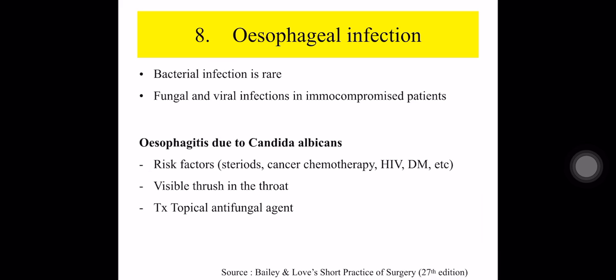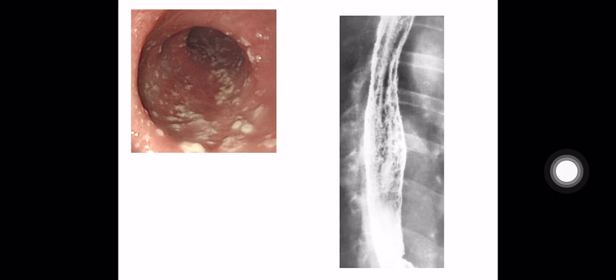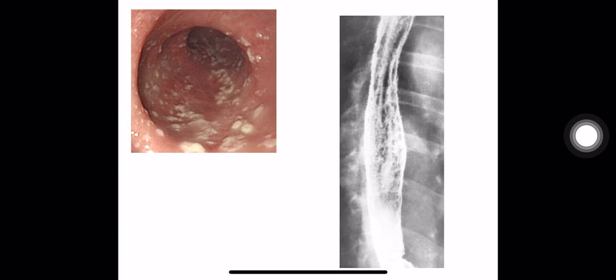The next one is esophageal infection. Bacterial infection is rare; it is mainly due to viral causes like herpes simplex virus and cytomegalovirus, and may also be due to Candida albicans. Risk factors are immunocompromised patients such as those with HIV, diabetes mellitus, and patients on steroids or anti-cancer chemotherapy. You can see visible thrush in the throat in association with esophagitis due to Candida albicans, and you can treat it with topical antifungal agents like nystatin.